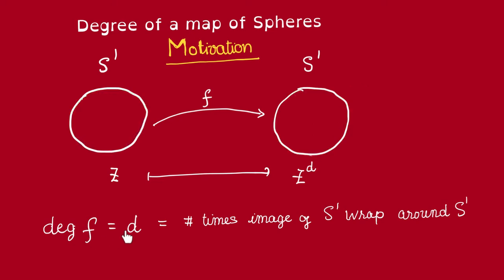Thus, a good way to think about this degree is that it's the number of times that the image of S¹ wraps around this S¹ here in the codomain.